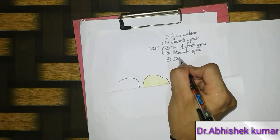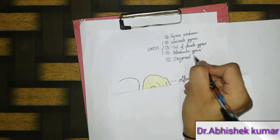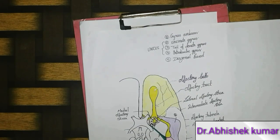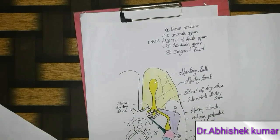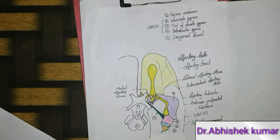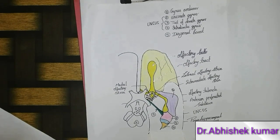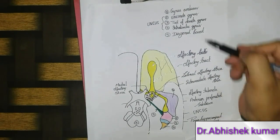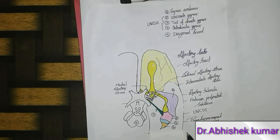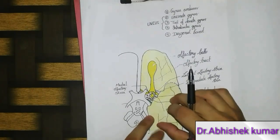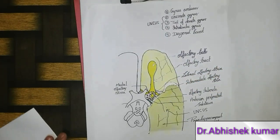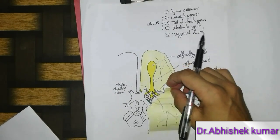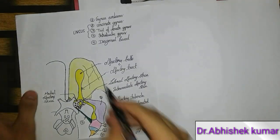Number five is the diagonal band. You can see the structures one, two, three, four, five labeled here. In the inferior aspect of the base of the brain, structures two, three, and four are labeled in various different colors, and the fifth one is the diagonal band. This structure is related to the anterior aspect and this one to the inferior aspect of the base of the brain.